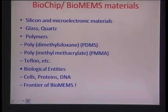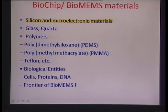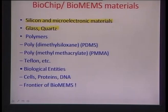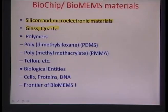Looking at the materials used for biochips or BioMEMS device fabrication, we start with silicon, where essentially all the processes are borrowed from micro-electronics. Another important material is glass and quartz. One reason for this is that we are talking about transduction processes, and sometimes transduction means chemical to optical signal transduction. Therefore, a transparent medium like glass or quartz is very much required for covering these devices.